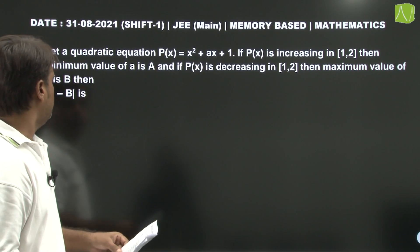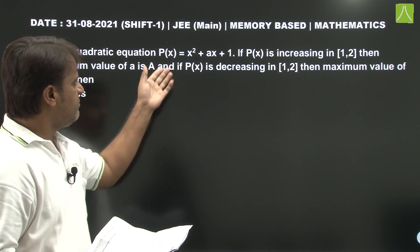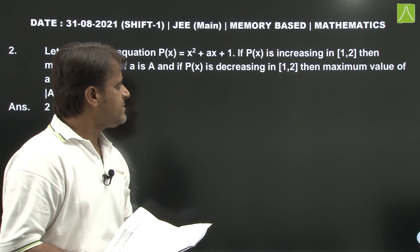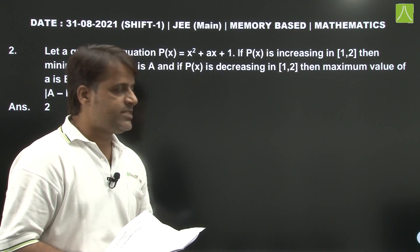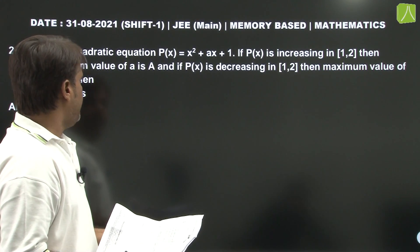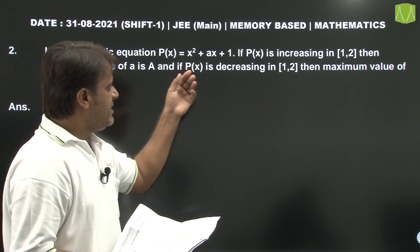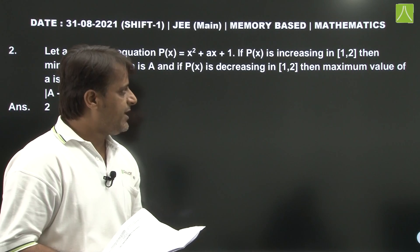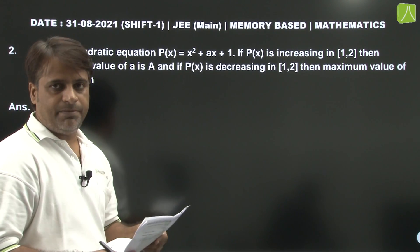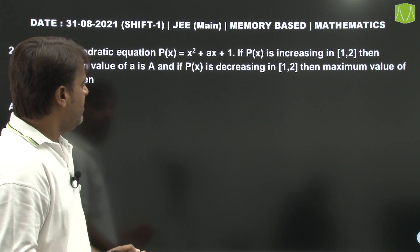Question number 2: Let a quadratic equation P(x) equal to Ax squared plus x squared plus Ax plus 1. If P(x) is increasing in closed interval 1 to 2, then minimum value of A is capital A. If decreasing, the maximum value of A is capital B. Find the value of mod of A minus B.